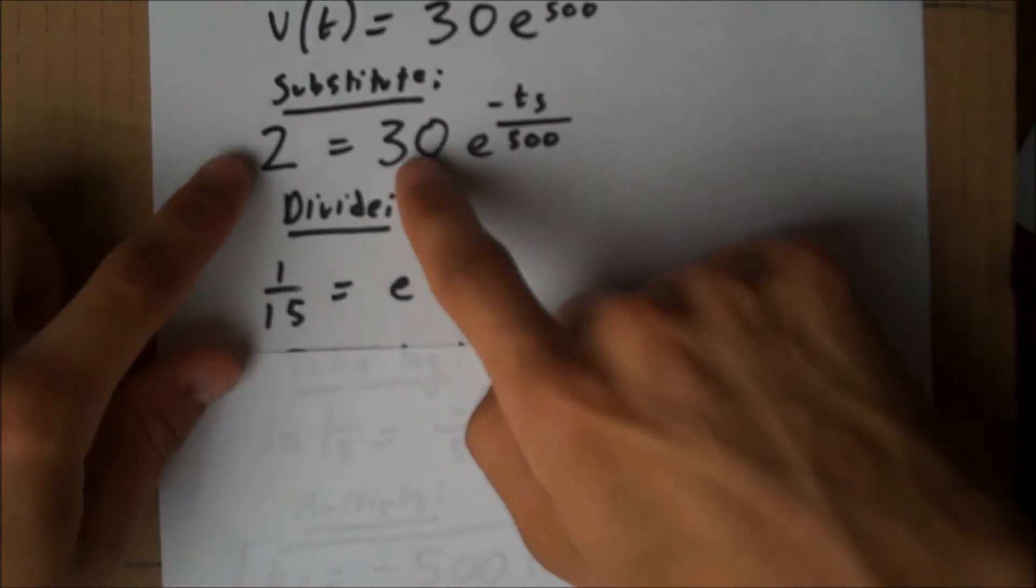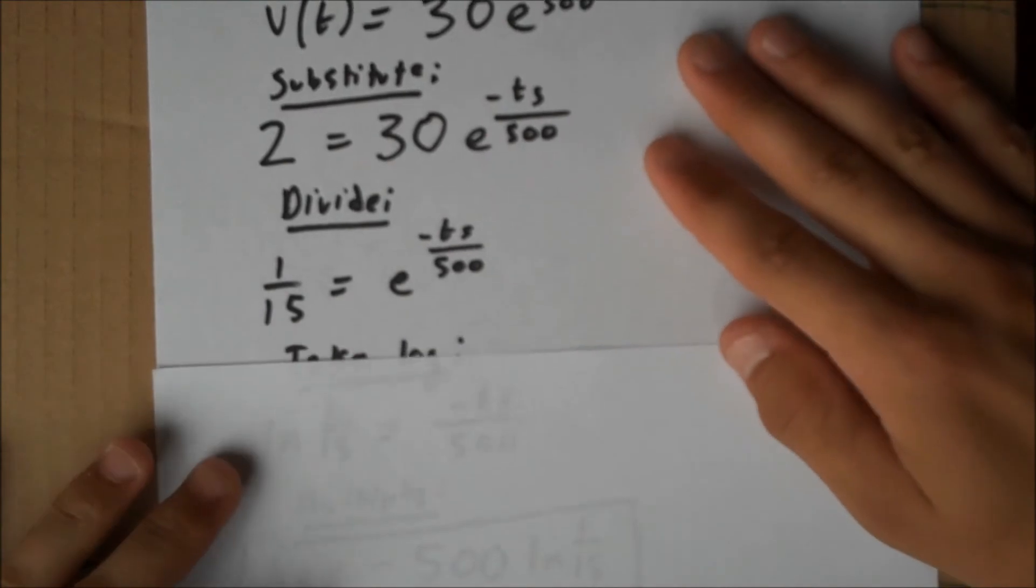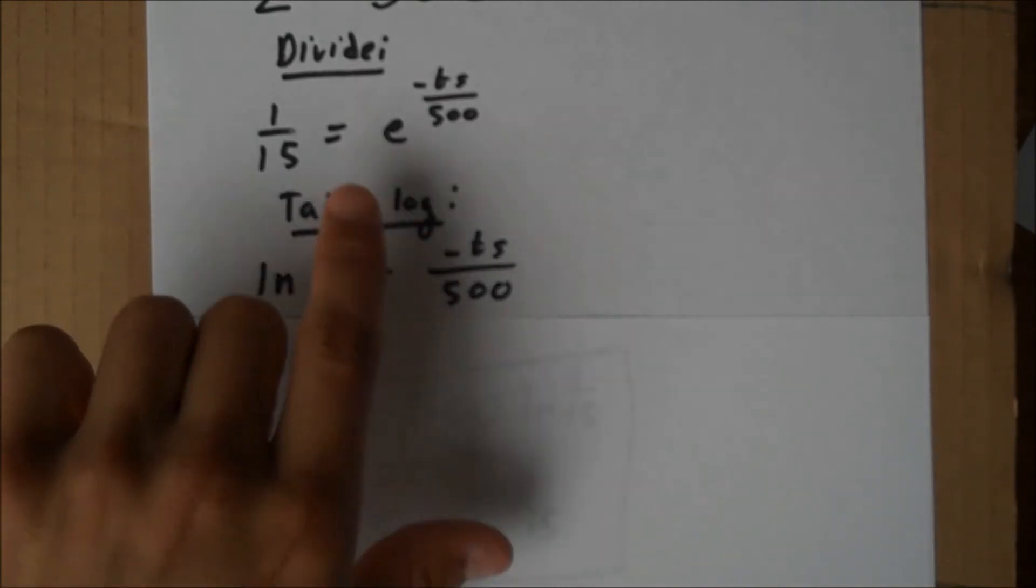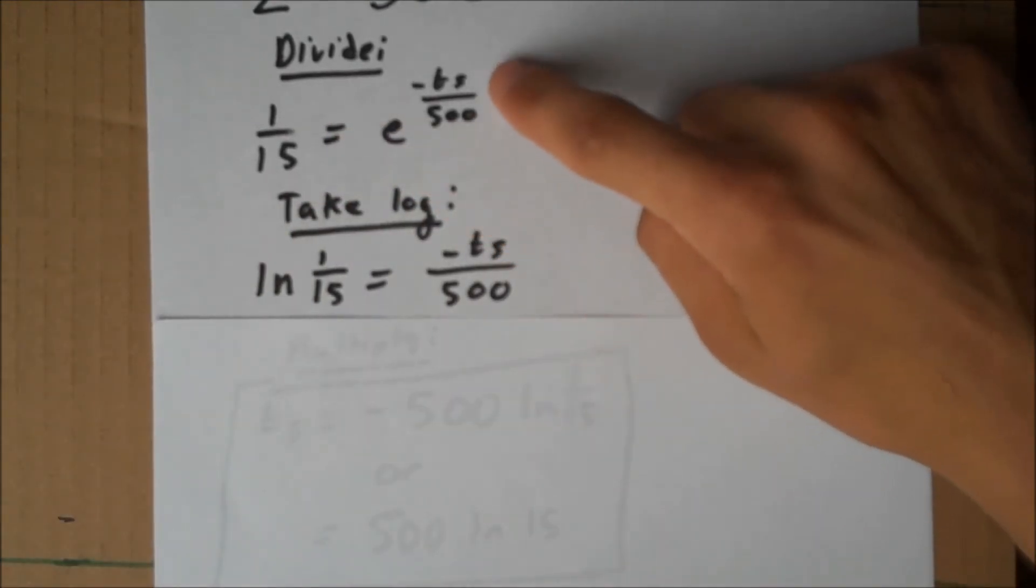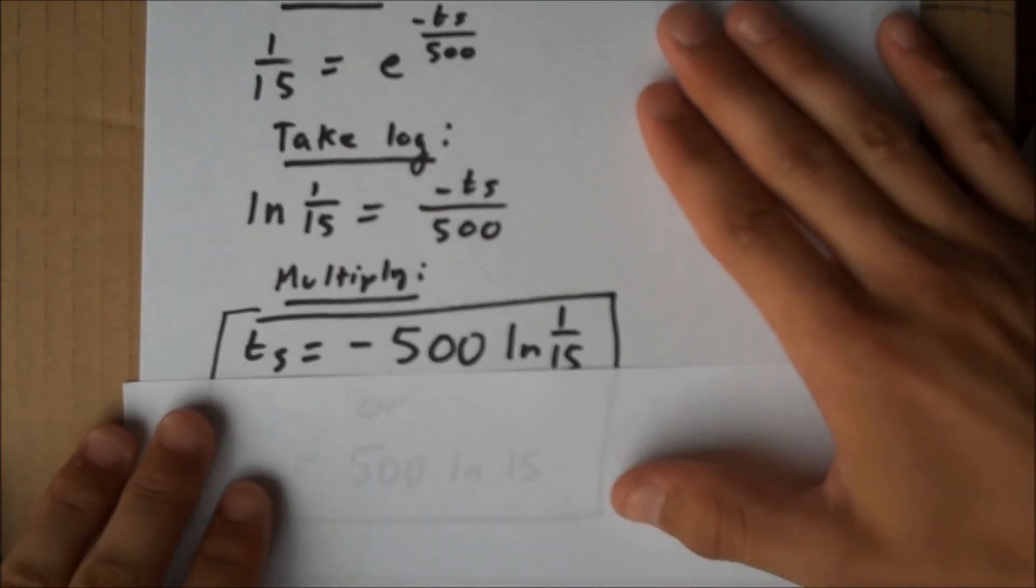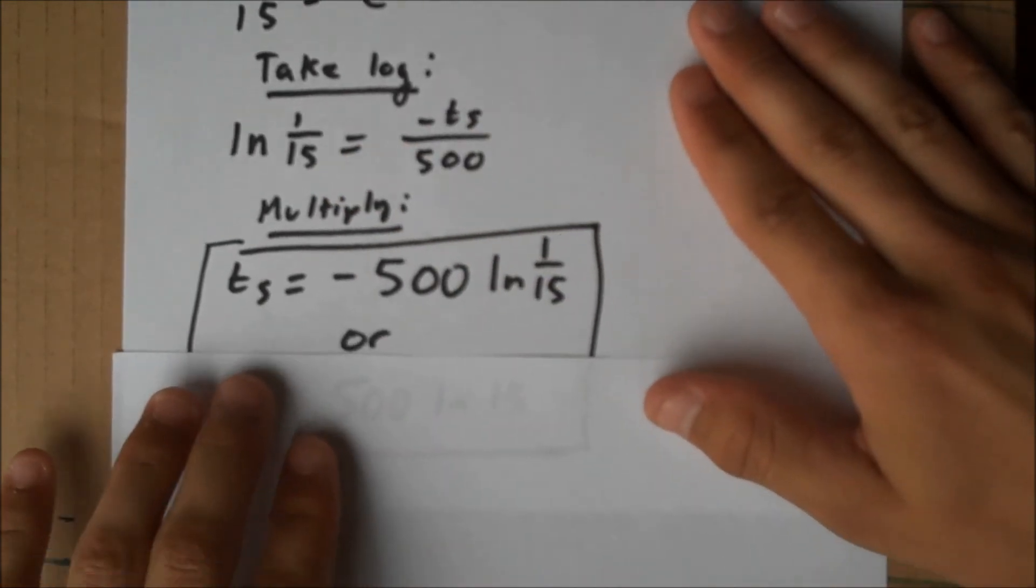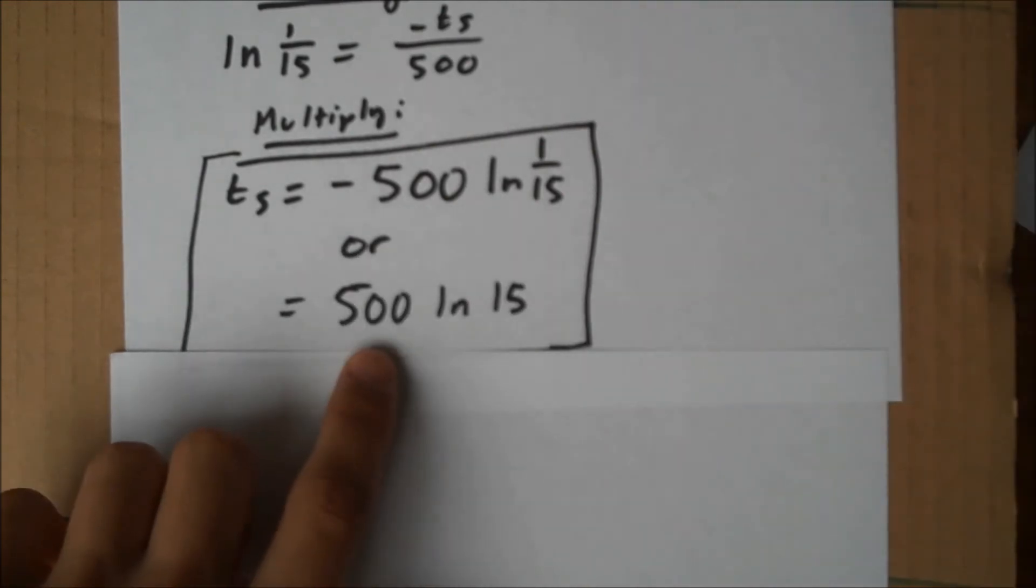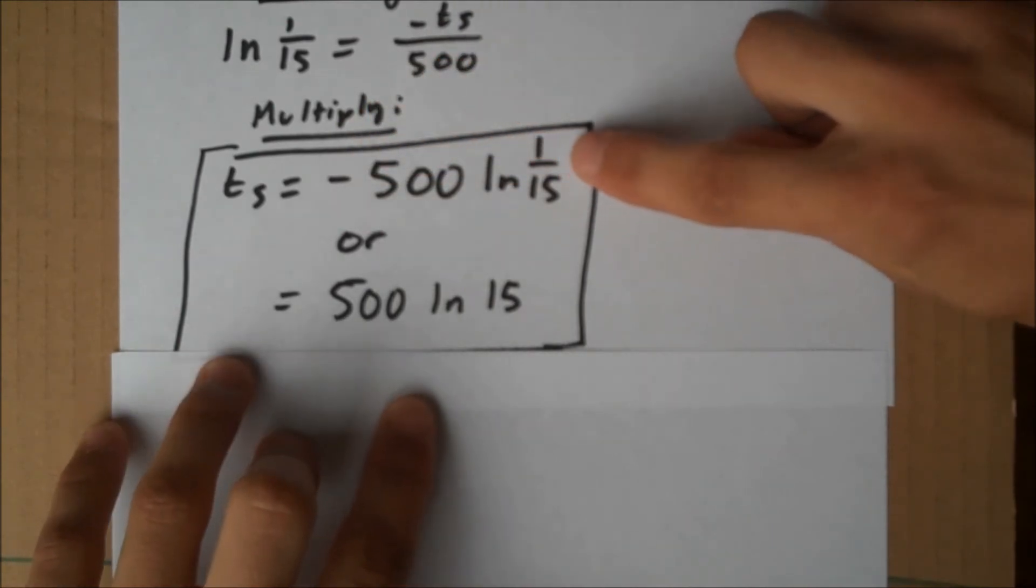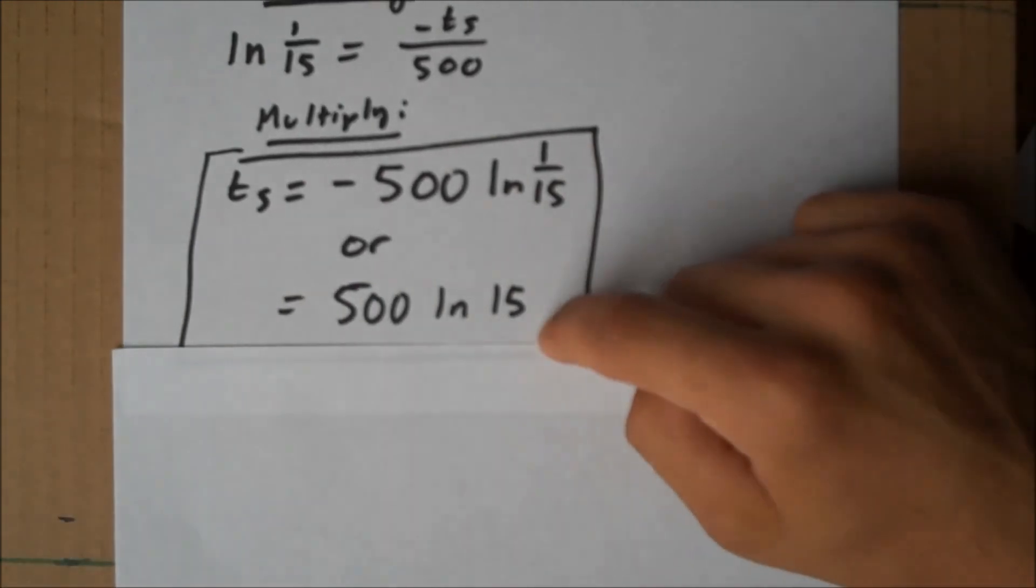So we'll divide. Moving the 30 over gives us 1/15 e to the negative ts over 500. Take logs. The log of the left side just gives us natural log of 1 over 15. And this will get rid of the exponential, giving us negative ts over 500. And then multiply the negative 500 over, giving us ts equals negative 500 natural log of 1/15. Or, if you'd like to simplify that further, 500 natural log of 15. Because the negative sign can be moved up into an exponent and then take the reciprocal of the inside of the natural log. That's a property of logs. Either answer will work.